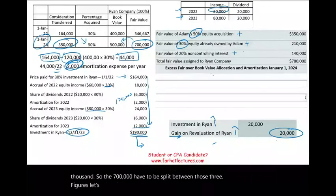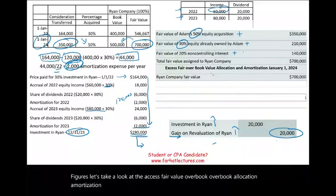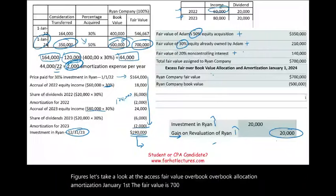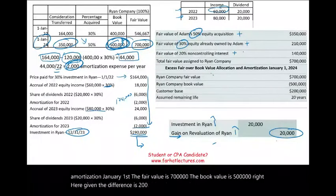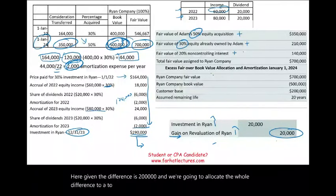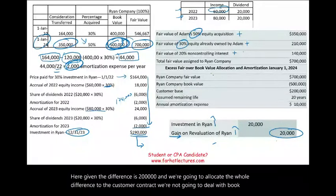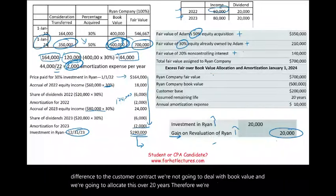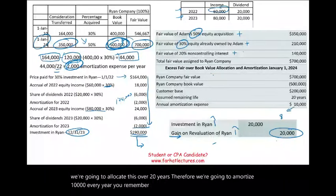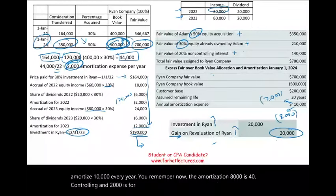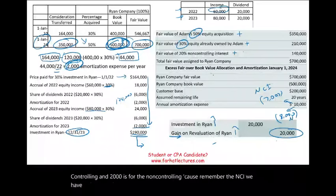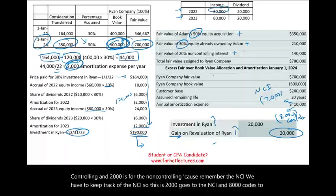Now let's look at the excess fair value over book value allocation as of January 1st, 2024. The fair value is $700,000 and the book value is $500,000, giving a difference of $200,000, all allocated to the customer contract and amortized over 20 years — $10,000 per year. Of that $10,000 amortization, $8,000 goes to the controlling interest and $2,000 goes to the non-controlling interest, since we must keep track of the NCI.